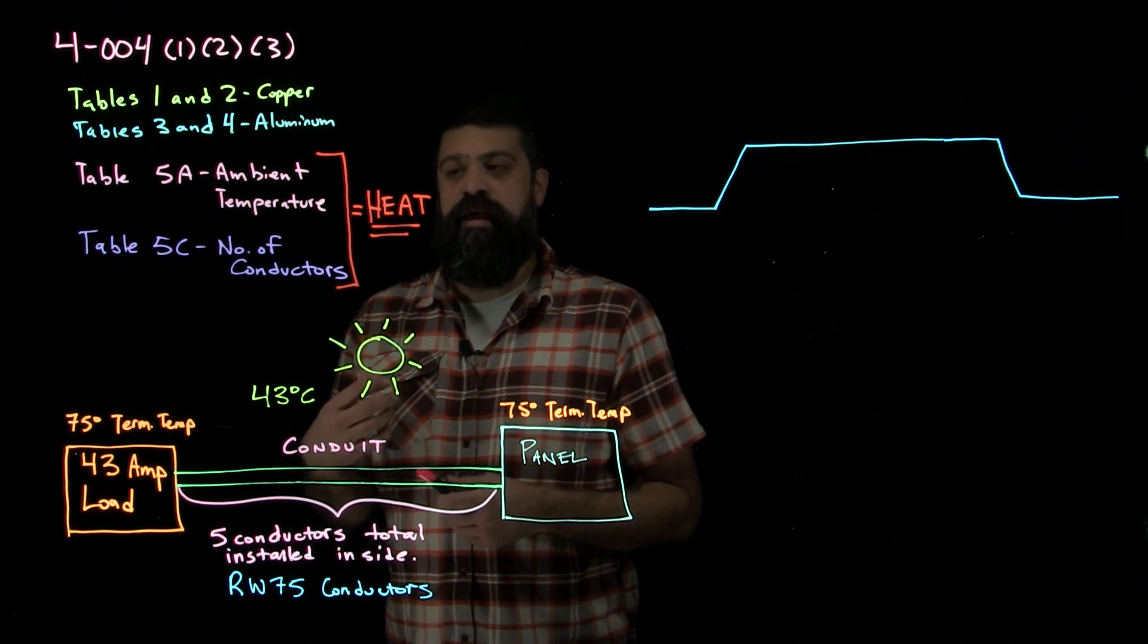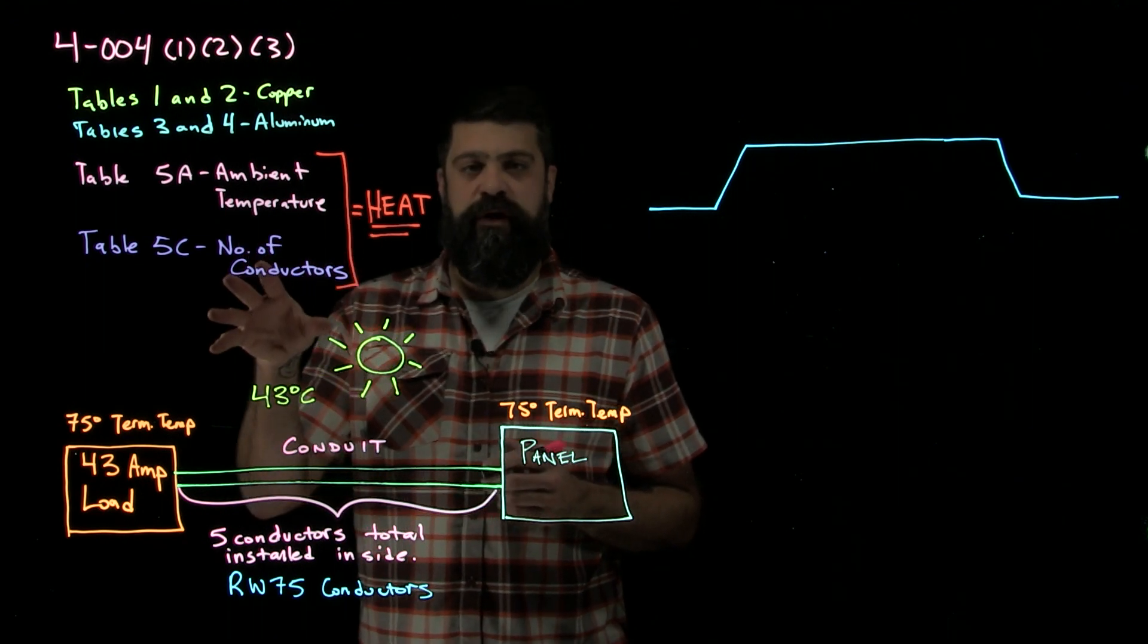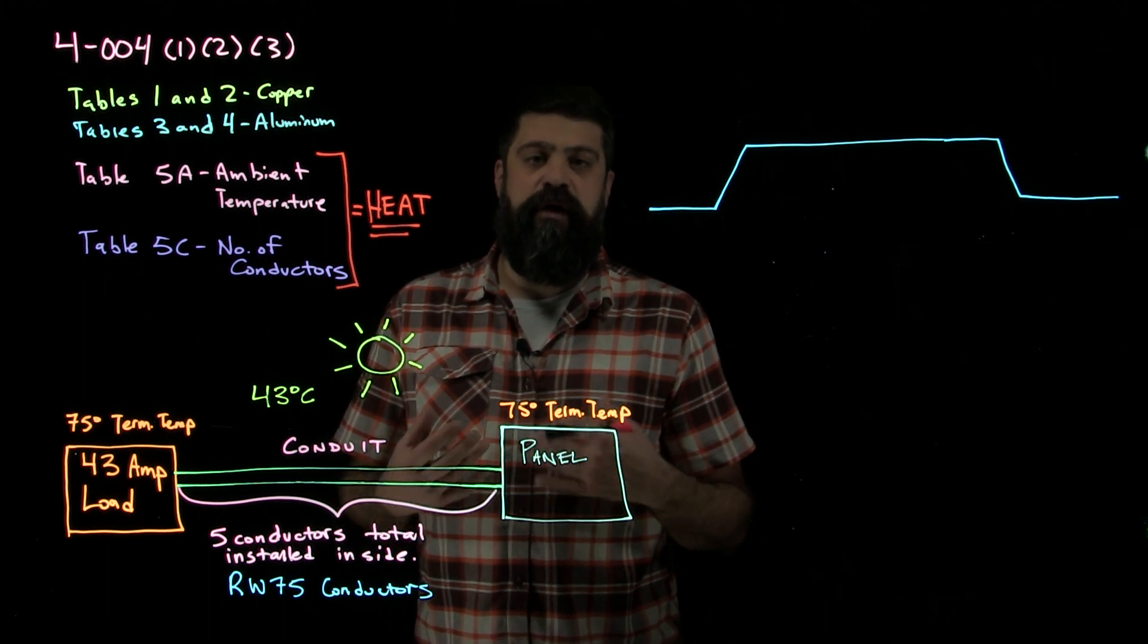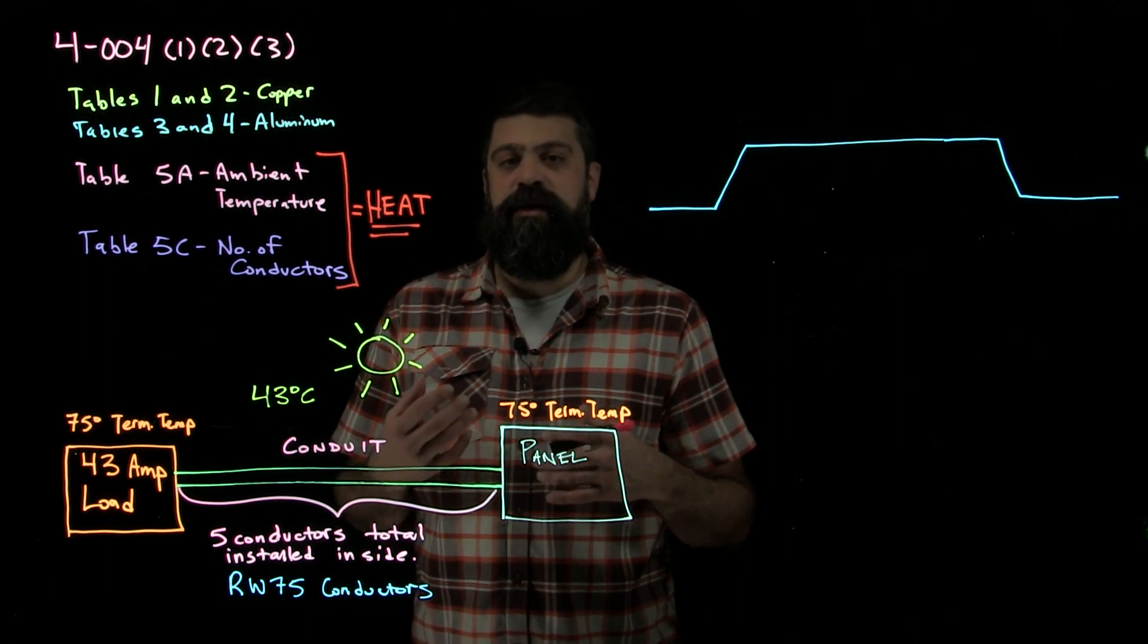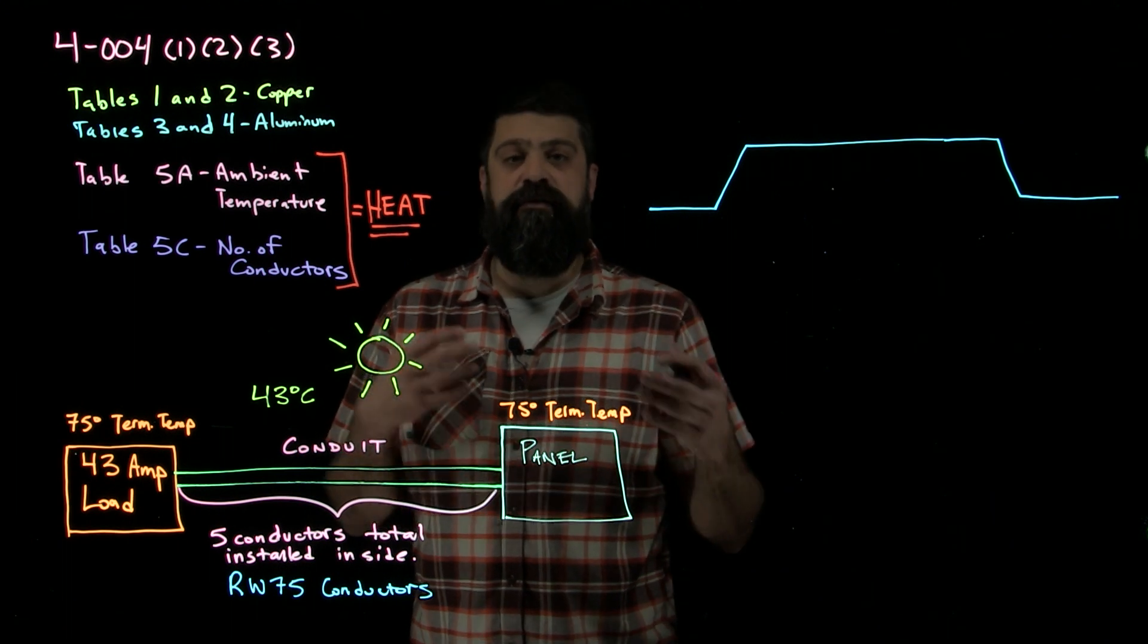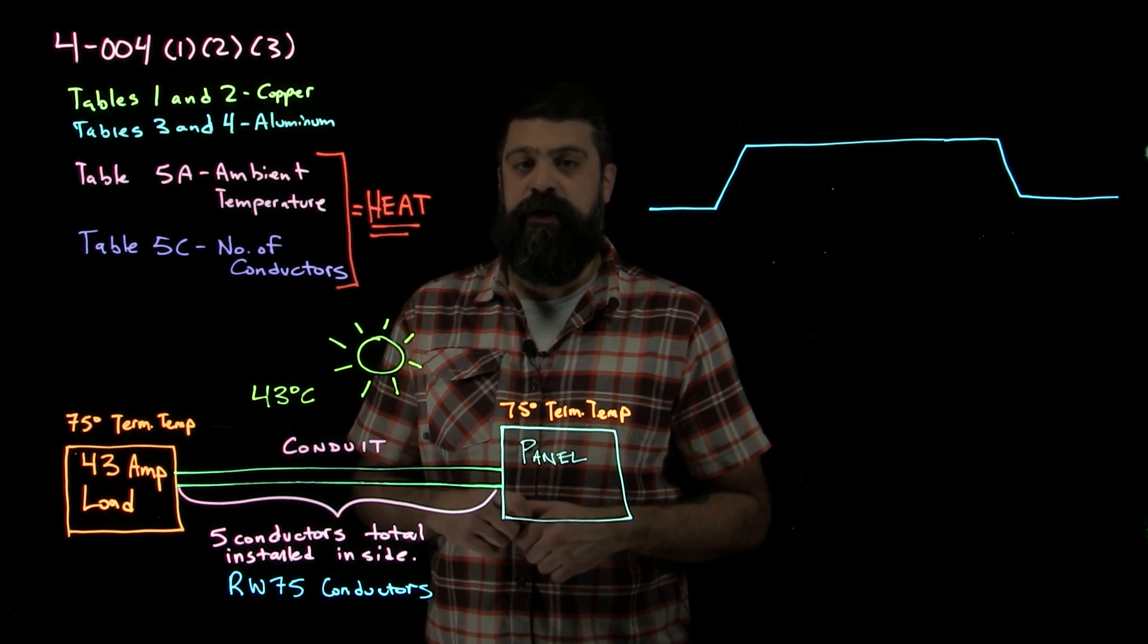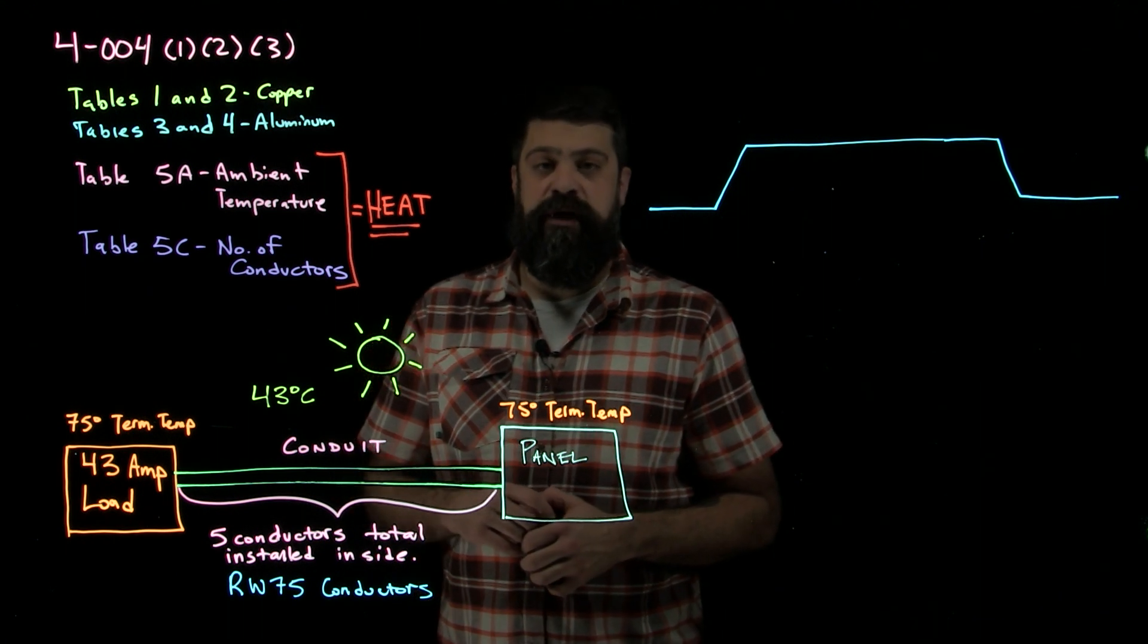If I have a higher ambient temperature or if I have more conductors, these things are creating heat and we know that's a bad thing for our wire. Not only does increased heat give us an increased resistance in our conductor, therefore increased volt drop, it's hard on the insulation and overall the system will break down sooner because of it.